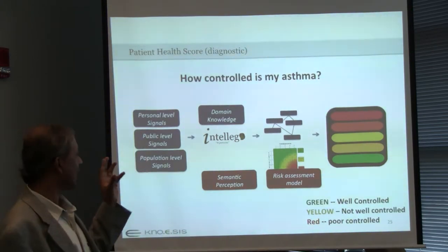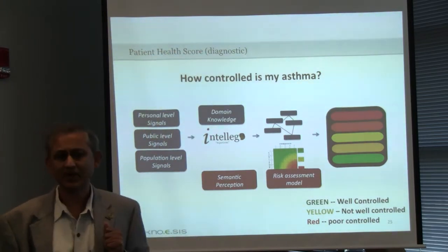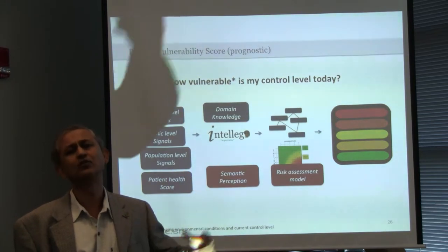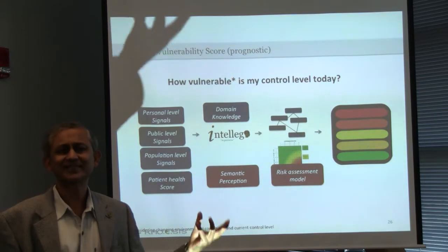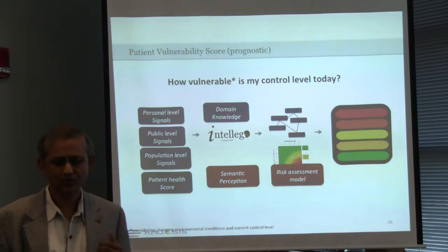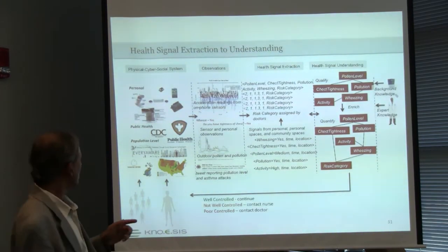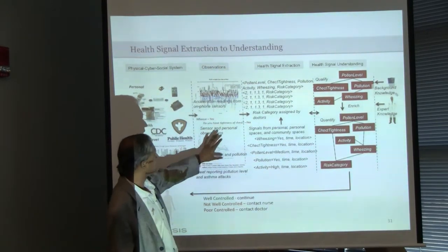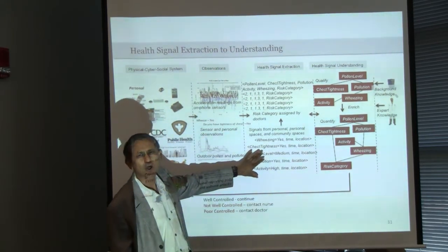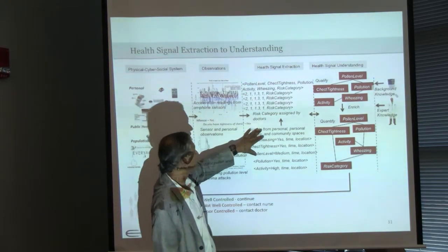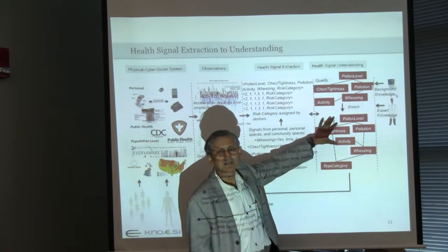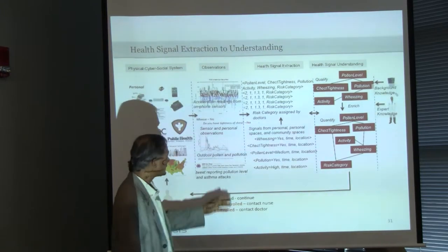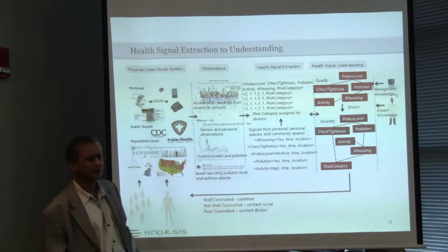At the end of all this processing, what you want to know is how controlled is your asthma or how vulnerable is your control level today. For example, if there is a significant increase in pollen count outside and you are vulnerable to increased pollen, then you want the system to give you information that you are vulnerable to this higher pollen count. From a processing perspective, you collect all the data — which arrives in heterogeneous form at different points in time — and the important thing is to convert all the data into a uniform form. Applications do semantic annotation: health signal extraction, which means annotating this data with respect to medical concepts described in the ontology and the background knowledge. When that annotation is done and computation runs on it, you get the actionable information.